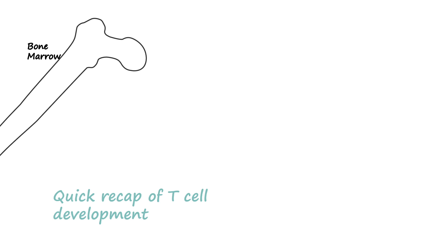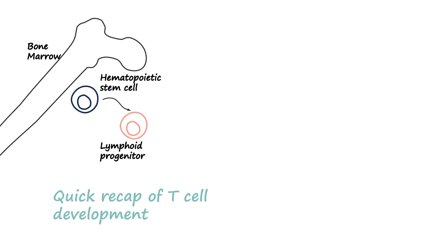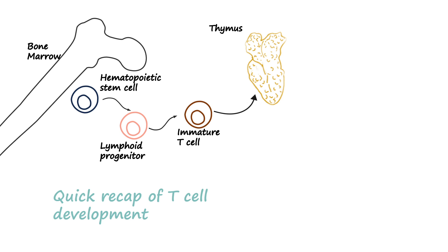T cell activation happens in the lymph nodes, but before that we should have a quick recap of T cell development. T cells are born in the bone marrow from the hematopoietic pluripotent stem cell, which gives rise to a lymphoid progenitor that eventually produces an immature precursor T cell. After it is born in the bone marrow, it moves to the thymus — the training school for T cells.